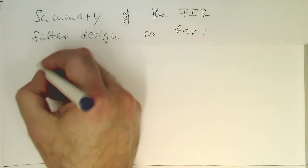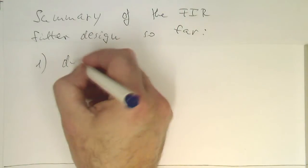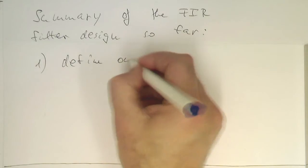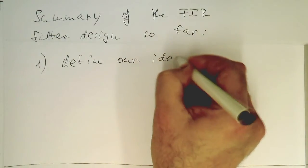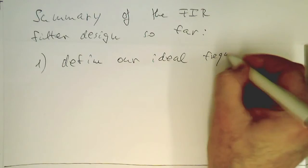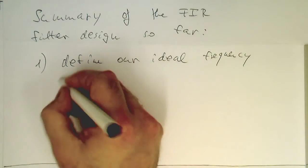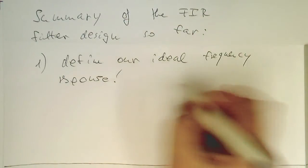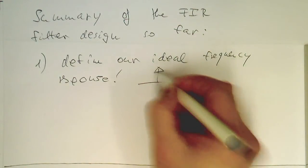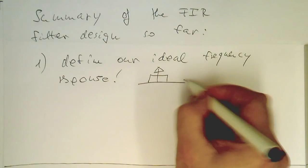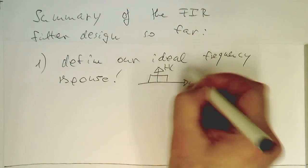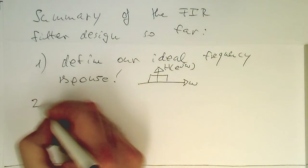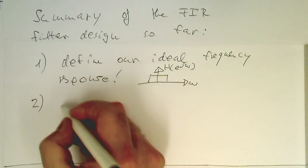What we do is we define our ideal frequency response. For example, a low-pass filter, H of e^(jω). Then we do the inverse Fourier transform.